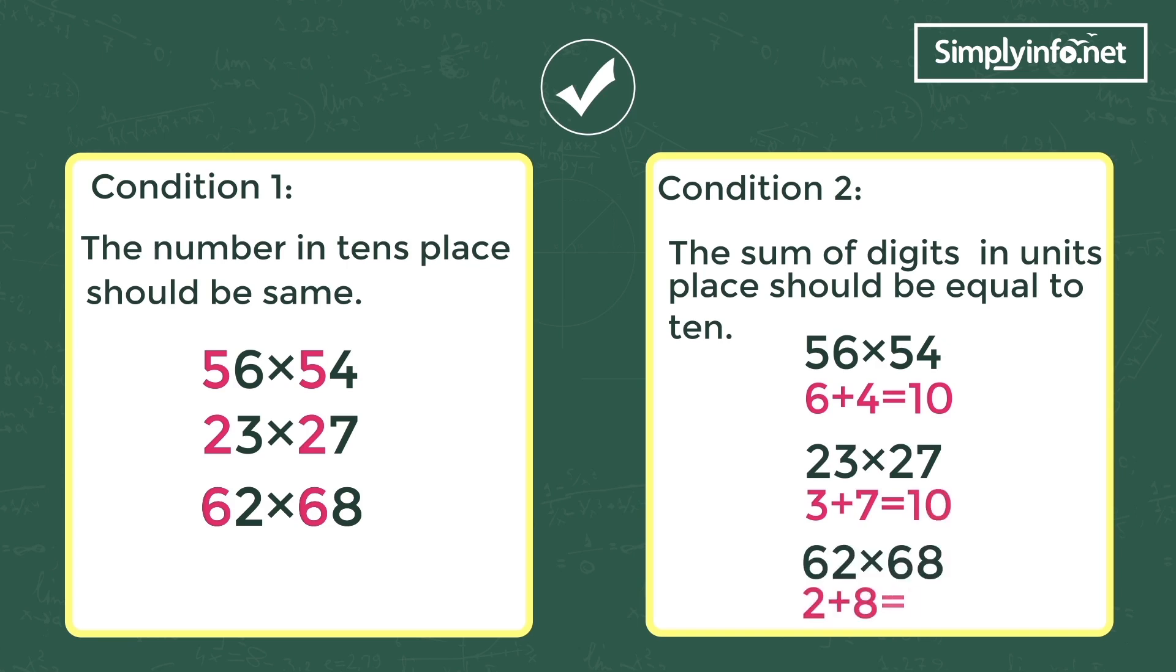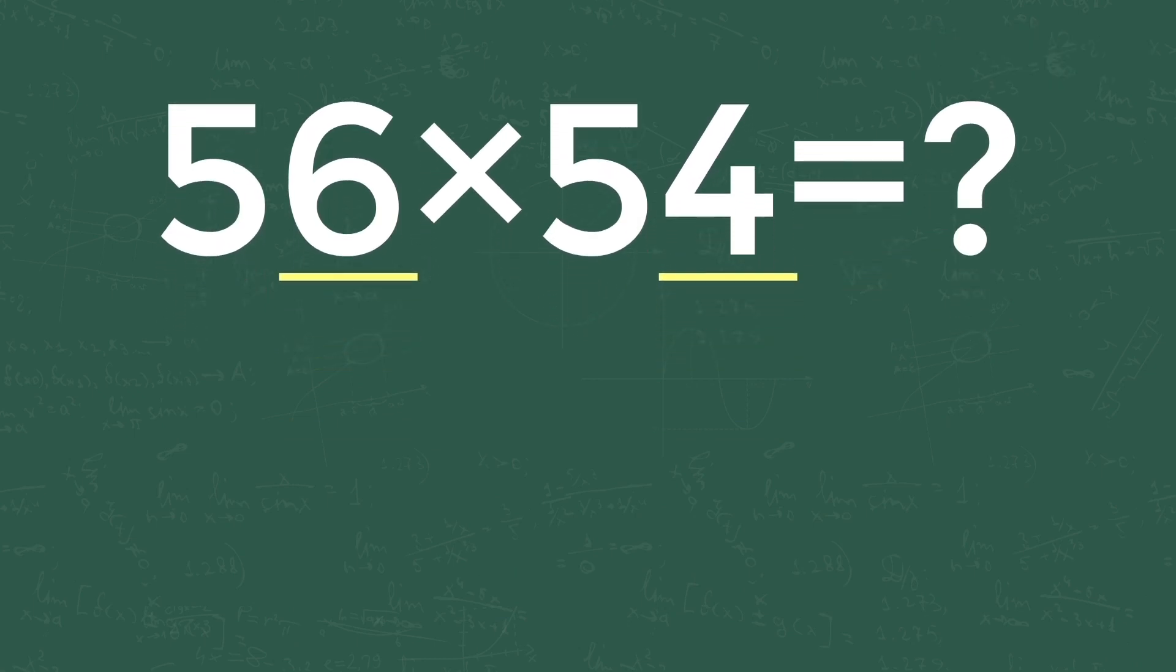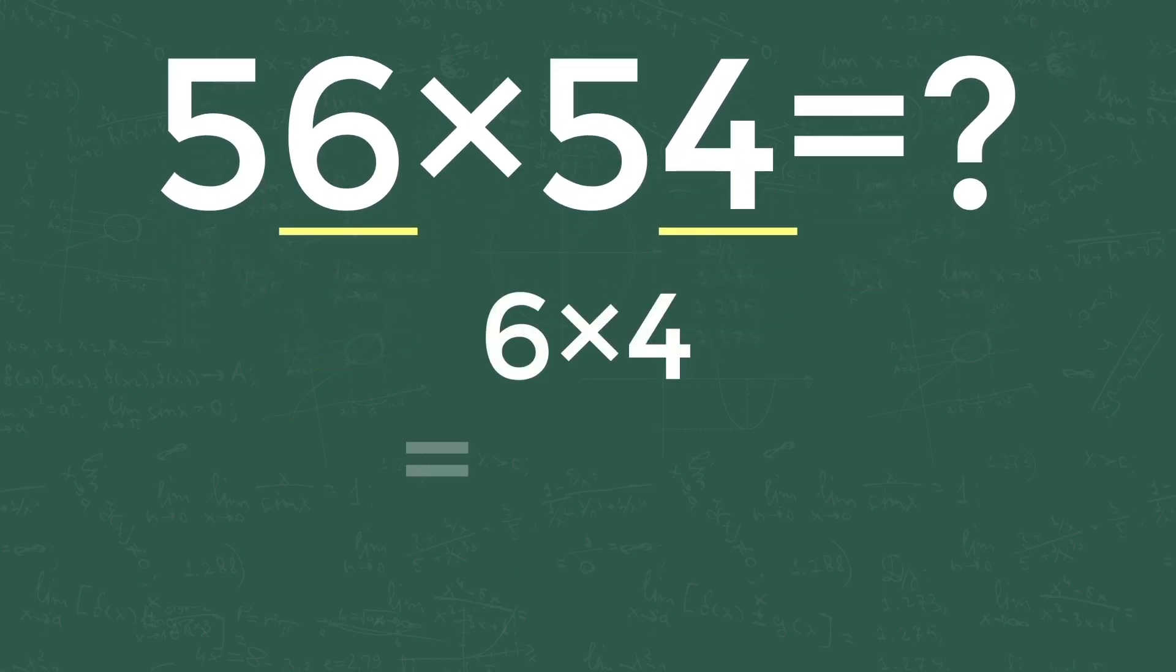Let's go to the main equation: 56 into 54 is equal to what? The trick is take the numbers from ones place and multiply them. In our problem that is 6 into 4, that is 24. Write that number in ones and tens as shown here.